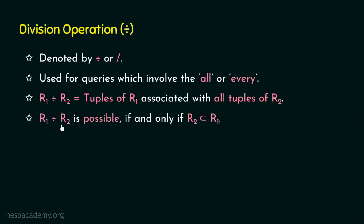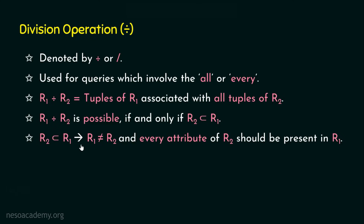R1 divided by R2 is possible if and only if R2 is a proper subset of R1. If we are going to do R1 divided by R2, then R2 should be a proper subset of R1. R2 is a proper subset of R1 only when two conditions are satisfied: R1 and R2 are different (not one and the same), and every attribute of R2 should be present in R1. When we see examples, it will be even more clear.